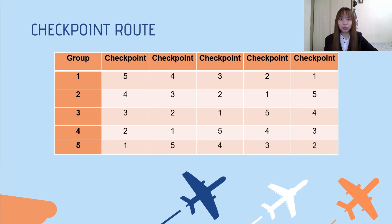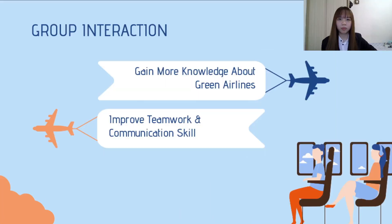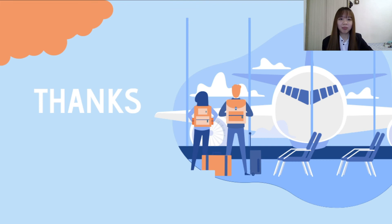For example, group one will start at checkpoint five, followed by checkpoint four, three, two, and one. This pattern will be followed by the other groups. After playing this game, we hope that all participants can gain more knowledge about the Green Airline index. We also hope they can improve their teamwork and communication skills. This is all from group 37. Thank you.